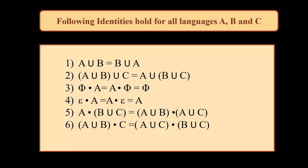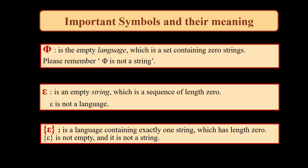Phi into a is equal to a into phi is phi. Epsilon into a is equal to a into epsilon is a. Also, a union (b union c) is equal to (a union b) concatenated with (a union c). Likewise, (a union b) concatenated with c is equivalent to (a concatenated with c) union (b concatenated with c).